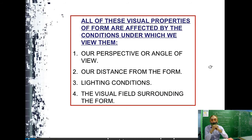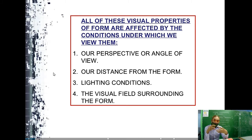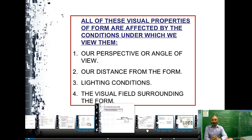All of these visual properties are affected by the conditions under which we view them. There are four reasons: our perspective or angle of view, our distance — the farther we are, the more different things look — lighting conditions (whether bright or dark changes the shape's appearance), and the visual field of surroundings. For example, in a desert, a square and circle look different there compared to our own surroundings.